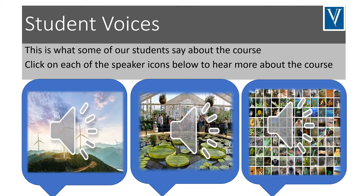I took environmental science because it had a lot of crossover with many other subjects. Learning about resource extraction really helped when I learnt about mineral formation in geology. Second year biology was made much easier because some of the things I studied, like Simpson's Diversity Index, I had already done in the previous year of environmental science. Many of my friends also said there was a lot of crossover with geography. The class had a great atmosphere and a wide variety of topics meant it never got boring. My favourite part of the course was the trips we took, as it showed how things we learnt in the classroom could be used in the real world. I would highly recommend taking environmental science as it will help support other science subjects.